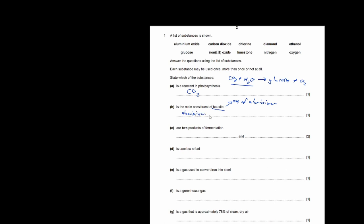The main constituent of bauxite. Whenever you see bauxite, bauxite is actually the ore of aluminium. So whenever you see bauxite it has to be related to aluminium. Therefore, the main constituent of bauxite has to be the only aluminium compound in this list of substances, which is aluminium oxide.